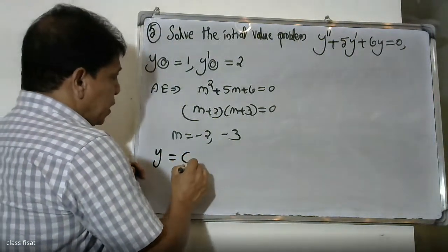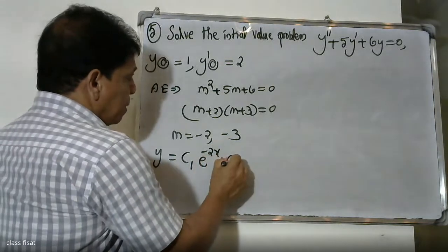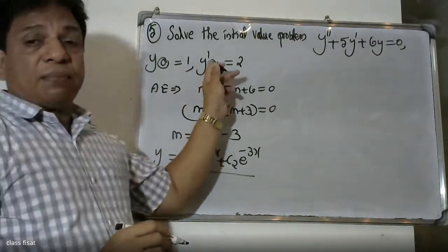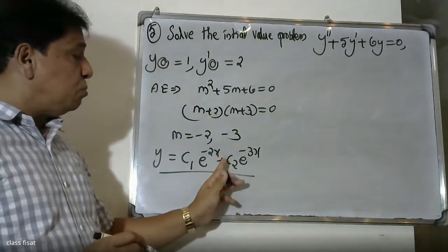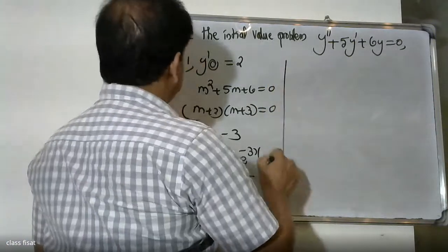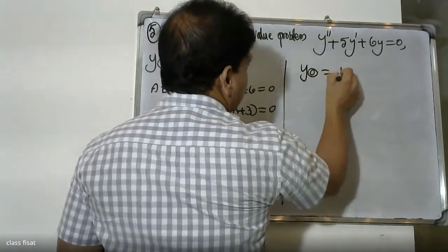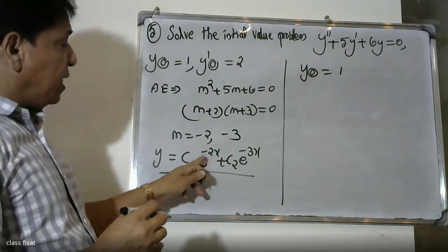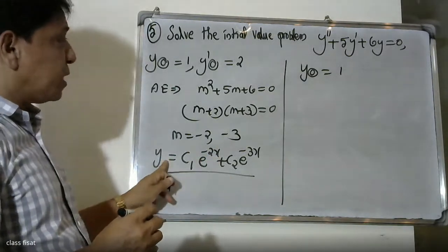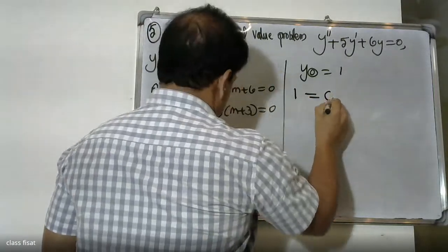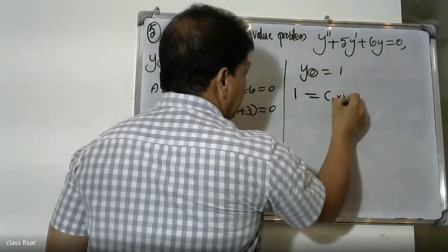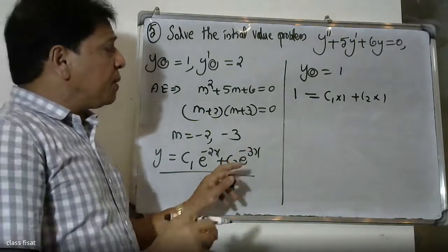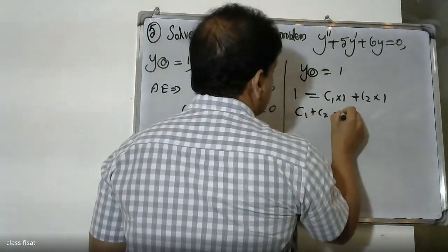Since we have distinct real roots, the general solution is y equals c1 into e raised to minus two x plus c2 into e raised to minus three x. Applying the initial condition y(0) equals one, we substitute x equals zero to get c1 plus c2 equals one.